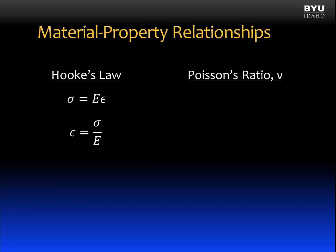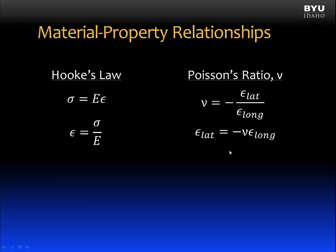The second relationship I'd like to review is Poisson's ratio. Poisson's ratio is a material property and shows us that there is a linear relationship between longitudinal strain and lateral strain. The form that we'll be using in our discussion is shown here.